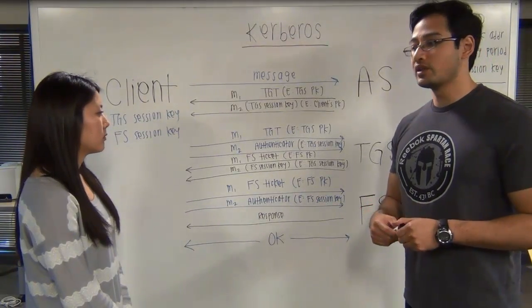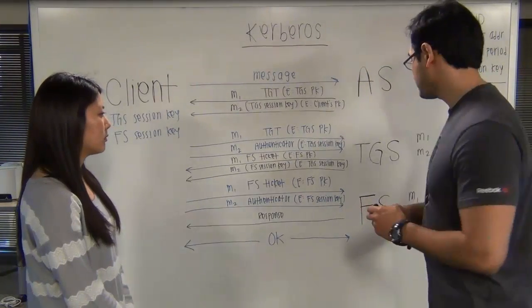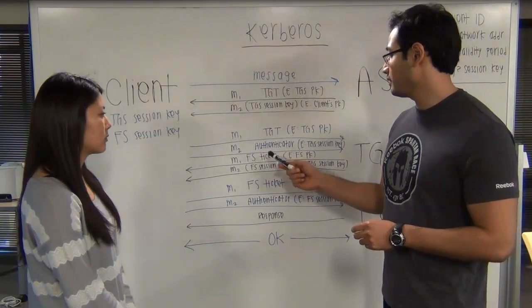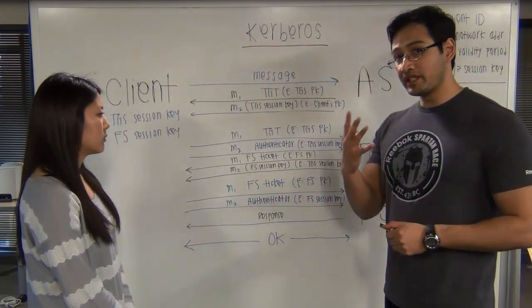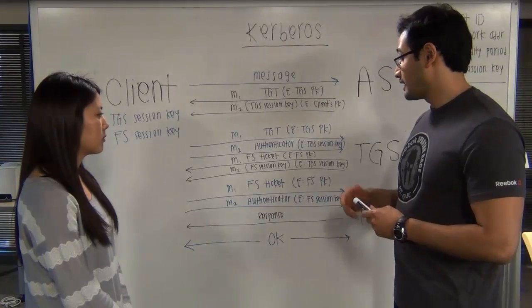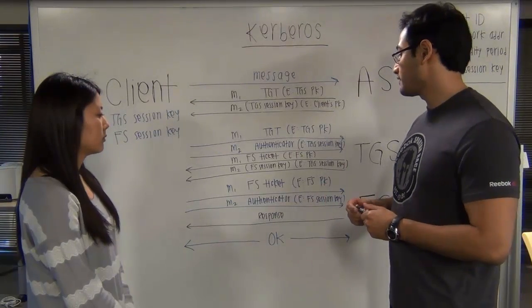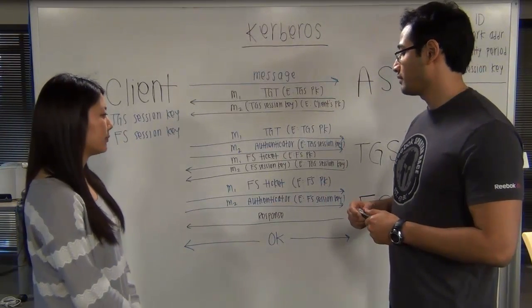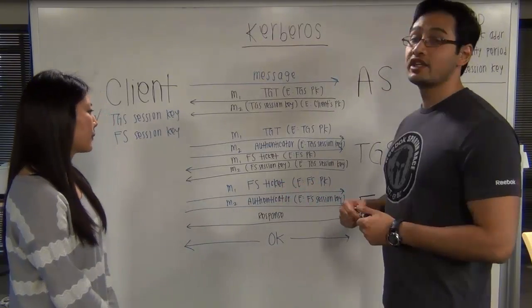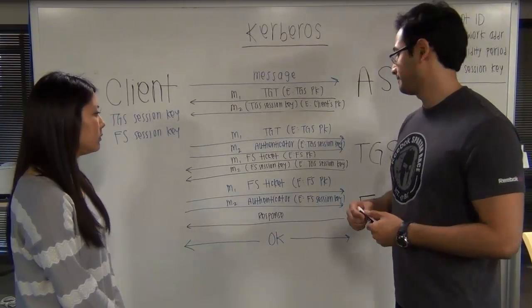Afterwards, the TGS will send two messages back to the client. Message one is the file server ticket, which contains those same four things, and is encrypted with the file server's private key. Message two is the file server session key, encrypted with the TGS session key.